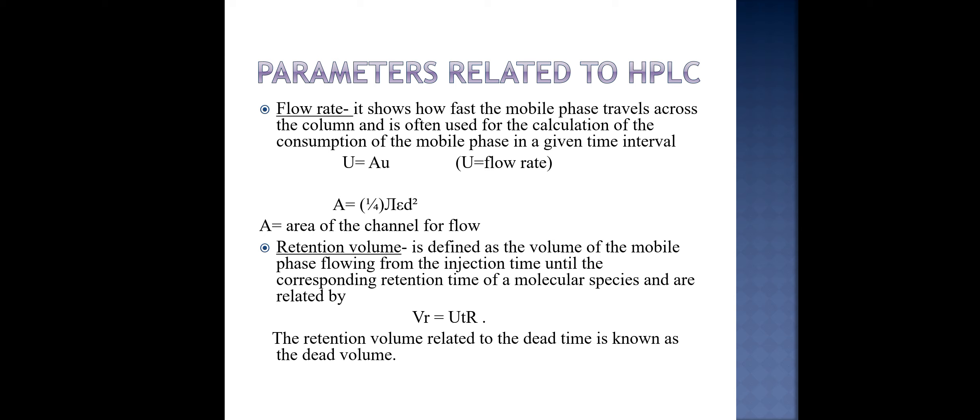Let's discuss about the parameters that are related to the HPLC. First is flow rate. It shows how fast the mobile phase travels across the column and is often used for the calculation of consumption of mobile phase at a given time interval. The formula used for flow rate U is equal to AU. Here, A is area of the channel for flow. Second parameter is retention volume. It is defined as the volume of mobile phase flowing from the injection time until the corresponding retention time of a molecular species and are related by VR is equal to UTR.